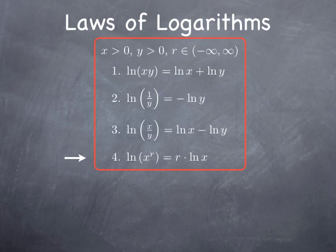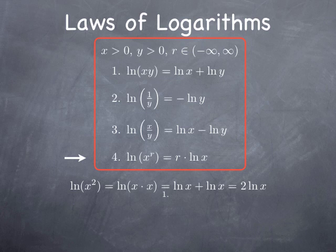Turning to the fourth law — which we will justify rather than fully prove — it states that ln(x^r) equals r times ln(x), i.e., you can pull the exponent out in front. Let's start with the simple case r equals 2: ln(x²) equals ln(x times x), and by the first law this is ln(x) plus ln(x), which is 2 ln(x). For r equals 3, ln(x³) equals ln(x times x²) equals ln(x) plus ln(x²) equals ln(x) plus 2 ln(x), which is 3 ln(x). So the formula works for r equals 2 and r equals 3.